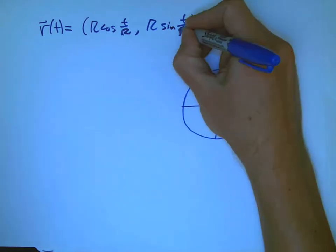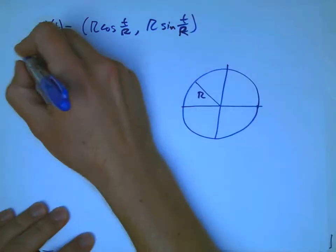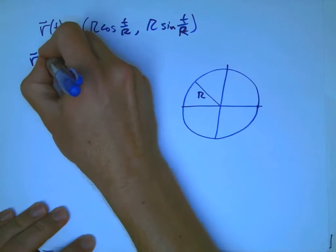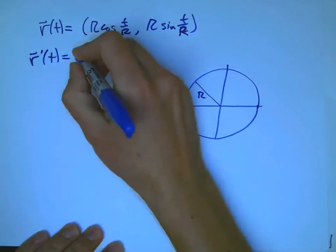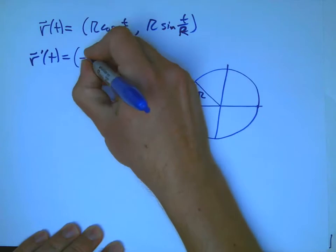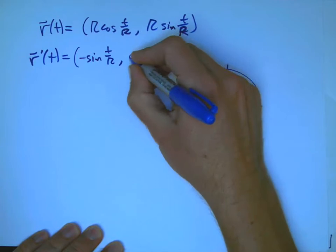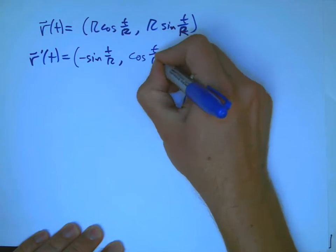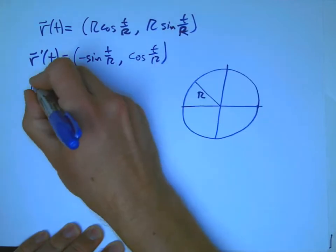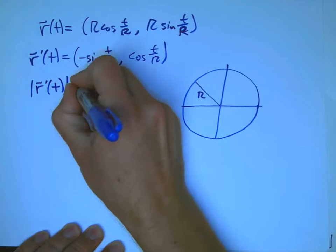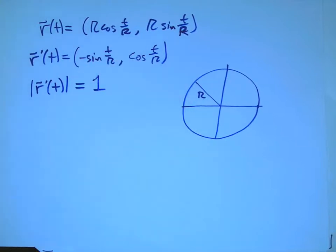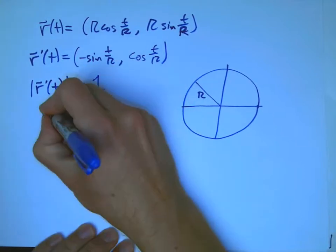And I claim that r prime is going to be a unit vector because when you do the chain rule, the r's cancel out, you get minus sine t over r and cosine t over r. And it's easy to calculate that that speed is 1.